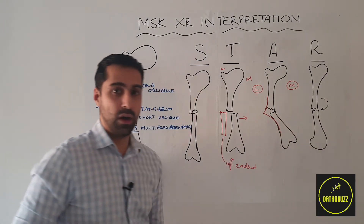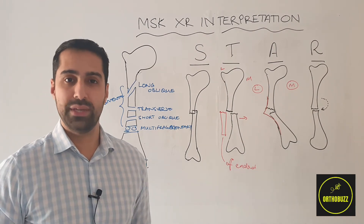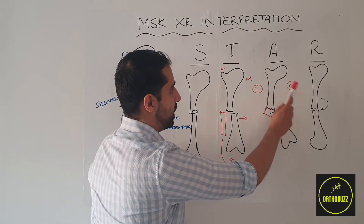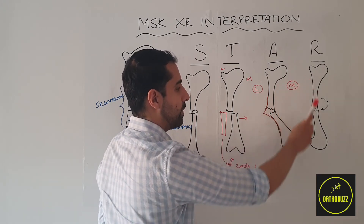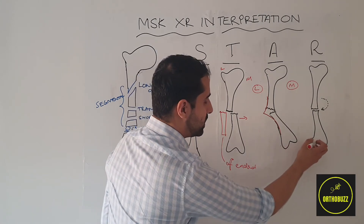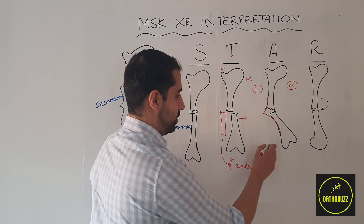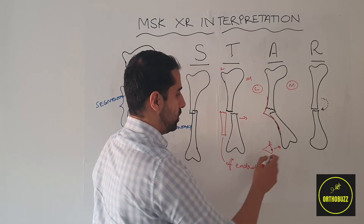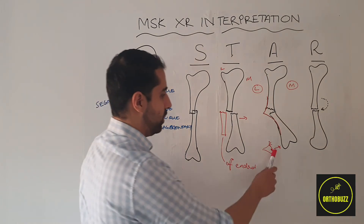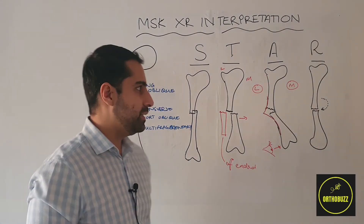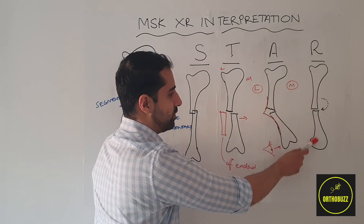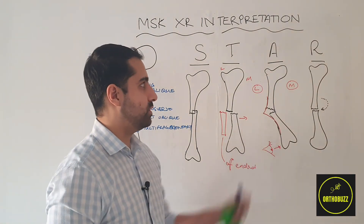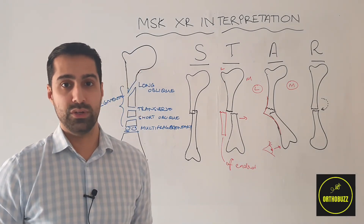Finally, R is for rotation. This is difficult to assess on 2D imaging and sometimes can't be commented on. In this case, we can see the proximal fractured end appears as an AP image, while the distal fractured end — the femoral condyle — appears as a lateral image. For us to be seeing an AP and a lateral image of the same bone, the distal end must have rotated. This would be described as a rotated fracture, though it can sometimes be difficult to comment on.